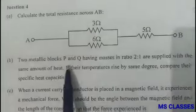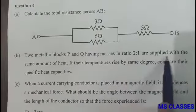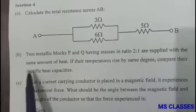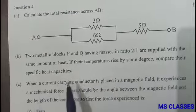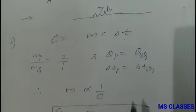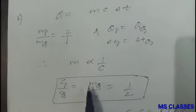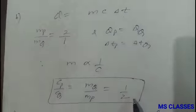Part (d): Two metallic blocks P and Q having masses in ratio 2:1 are supplied with the same amount of heat. If their temperature rises by the same degree, compare their specific heat capacities. As you can see, m is inversely proportional to c, so the ratio is 1:2.